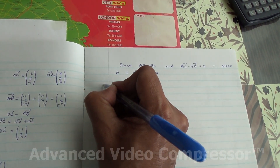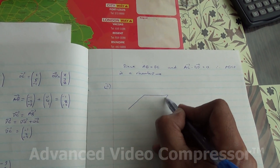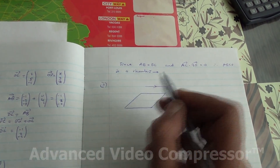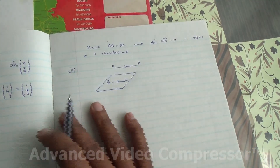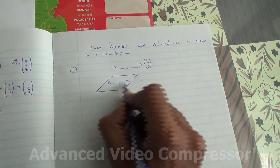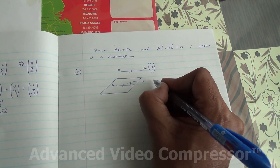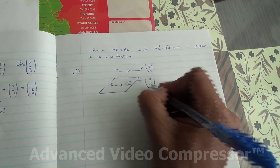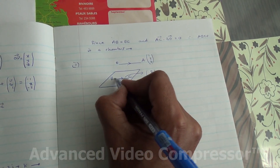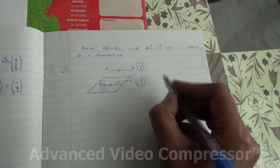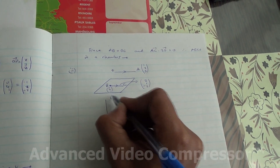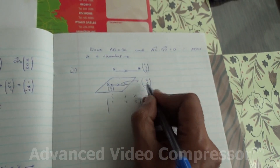That completes the first part. For the second part, plane P is parallel to line OA and contains line BC. OA direction is (1, 2, 3) and BC is (2, 1, -2). Point B is (0, 4, 1). To find the equation of the plane, we take the cross product of OA and BC using the determinant of the matrix with rows i, j, k then (1, 2, 3) then (2, -1, -2).